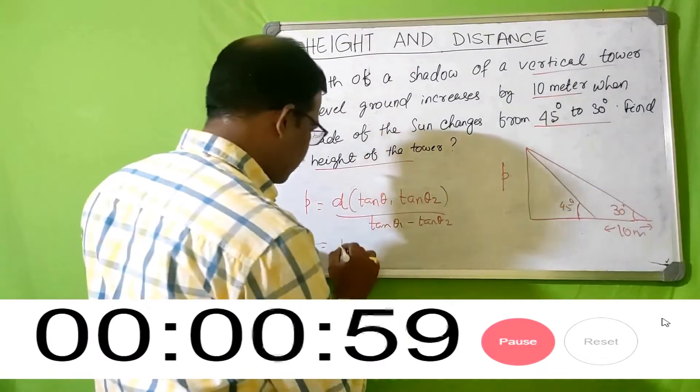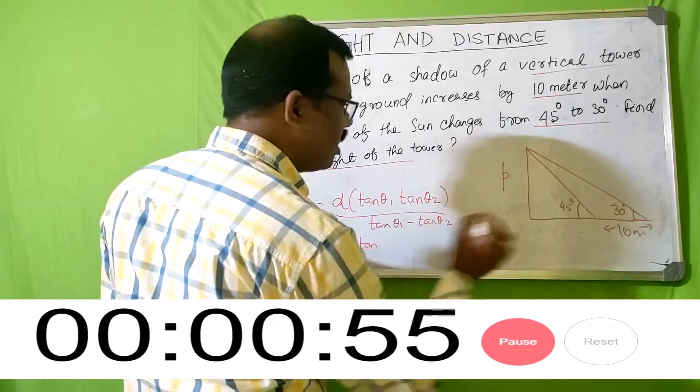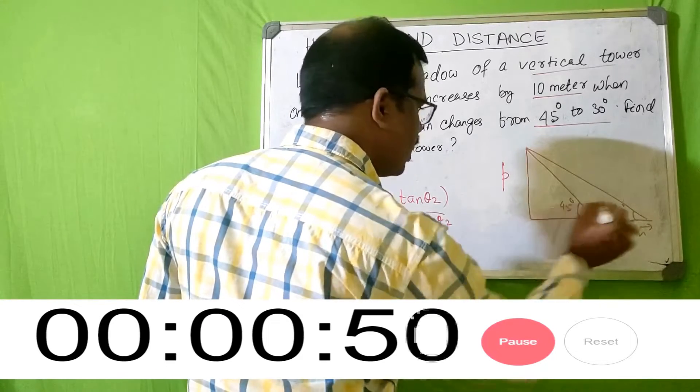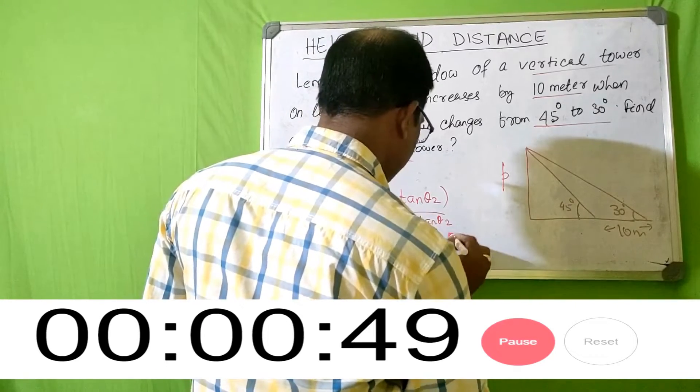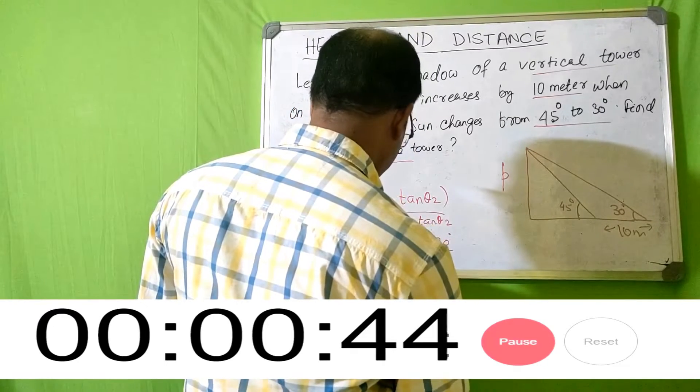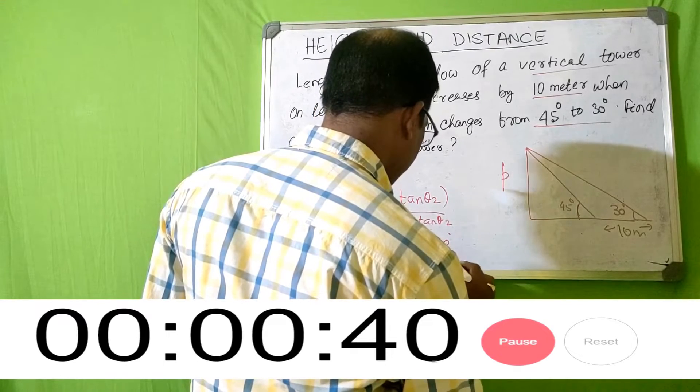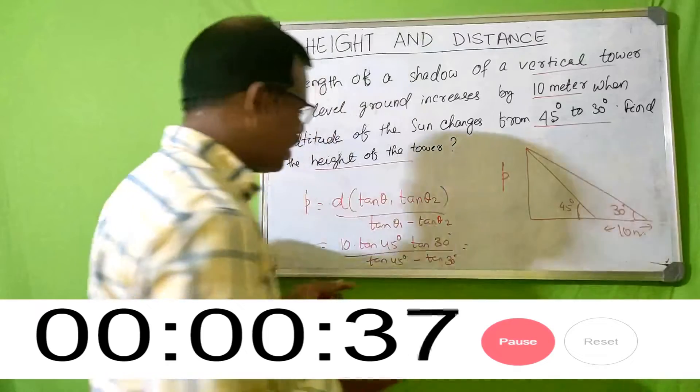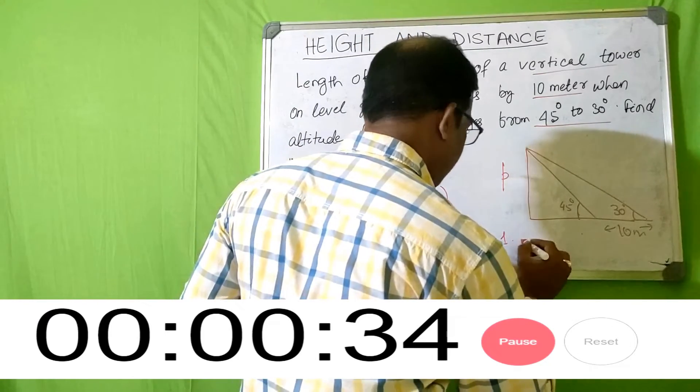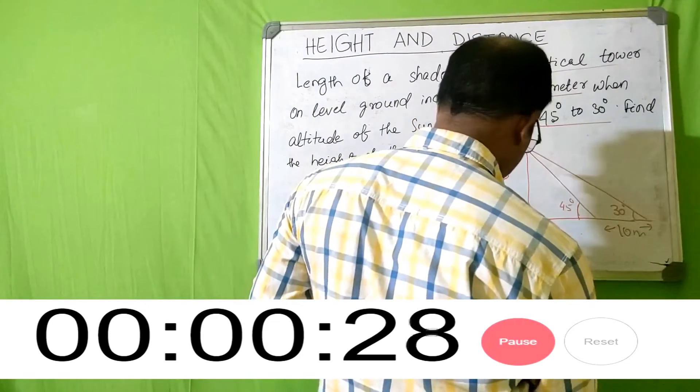Just put the values. d is 10, tan of theta one is 45 degrees minus tan of theta two is 30 degrees, divided by tan of 45 degrees minus tan of 30 degrees. Tan 45 becomes 1, tan 30 will become 1 by root 3.